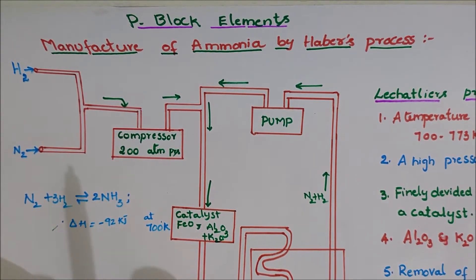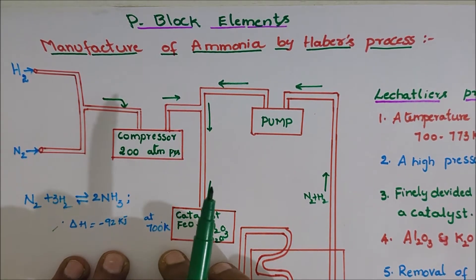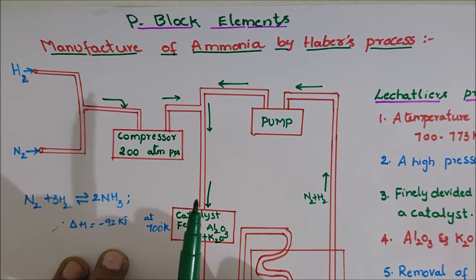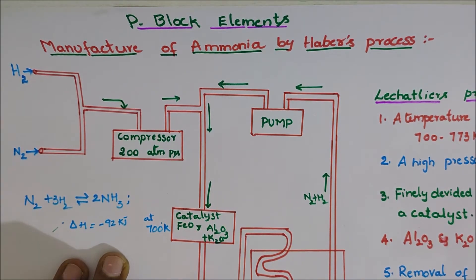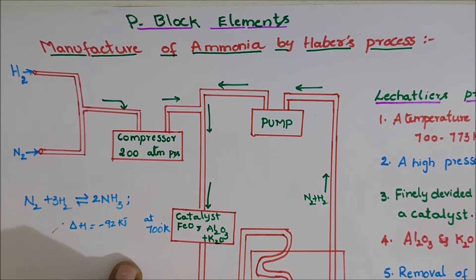Welcome to Lavanya Chemistry Classes. In this session, I am going to explain about an important lesson on P block elements, mainly the manufacture of ammonia by Haber's process. This is a very important and commercial method to obtain ammonia, popularly called as Haber's process, also called as Haber-Bosch process.